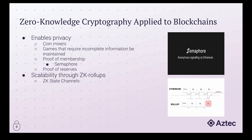Now we're going to look at a few ways that zero-knowledge can be applied to blockchains — two areas where it can be very beneficial: privacy, and scalability through ZK Rollups. On the privacy side, there are a number of applications where enabling privacy achieves interesting functionality. Number one is CoinMixers — for those familiar with TornadoCash, it's the same concept. A CoinMixer allows you, along with a group of people, to deposit a fixed amount of tokens to a smart contract, and then from another address withdraw those tokens, with the path between the two addresses completely obscured.